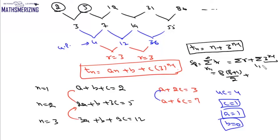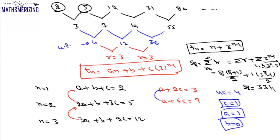The summation of r is n(n+1)/2, and the summation of 3 to the power r minus 1 is a GP: 1, 3, 3 squared, up to 3 to the power 7. Using the GP sum formula, the total sum of the first 8 terms of this sequence is 3316.